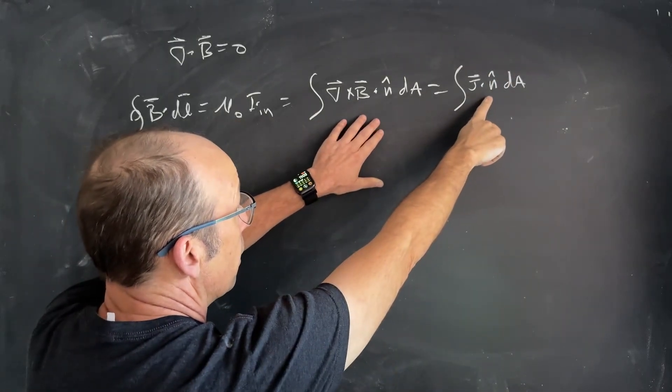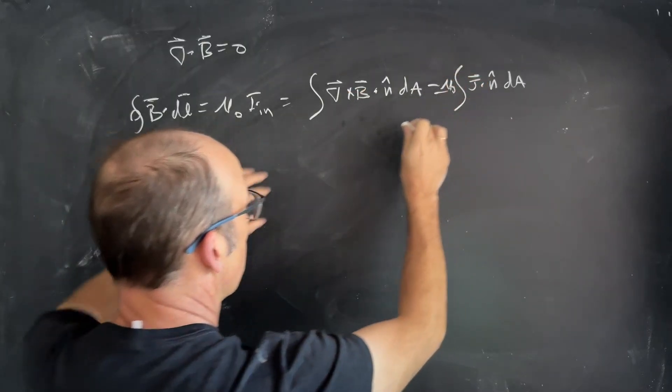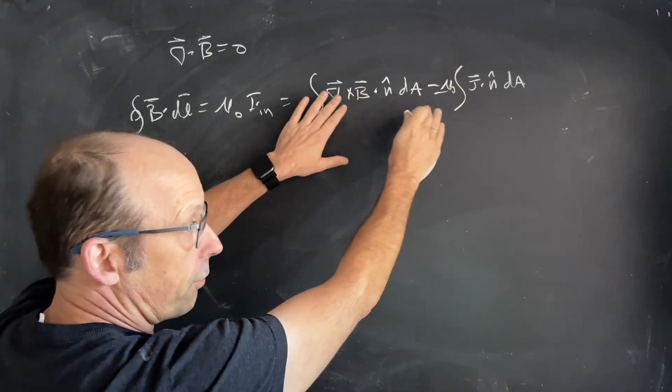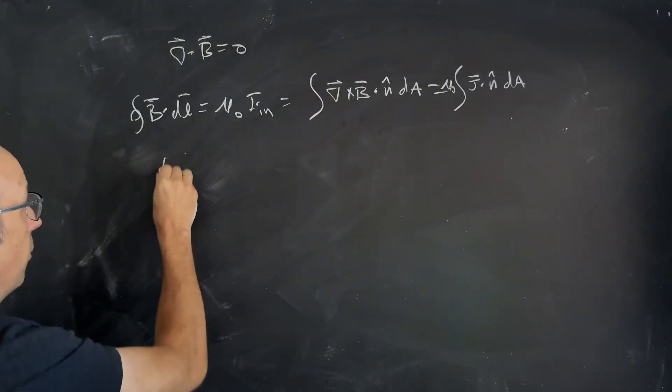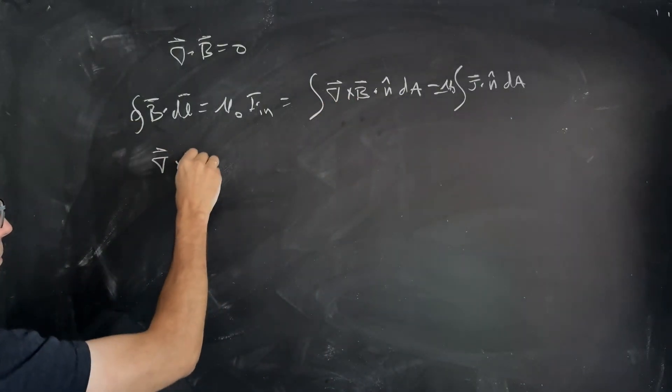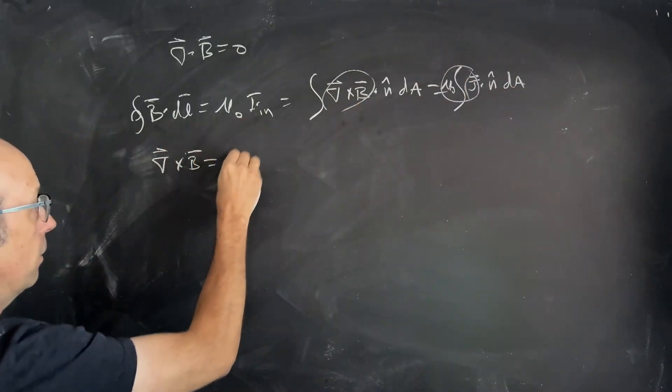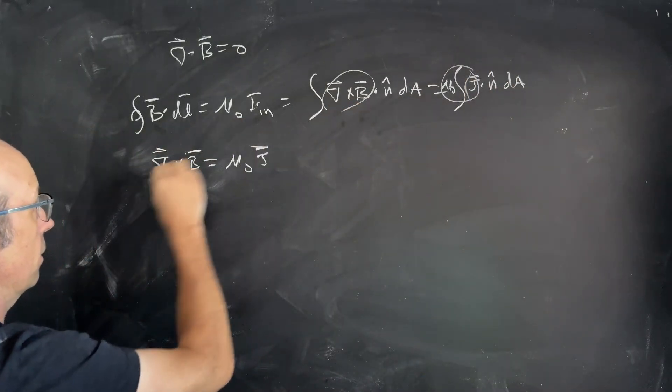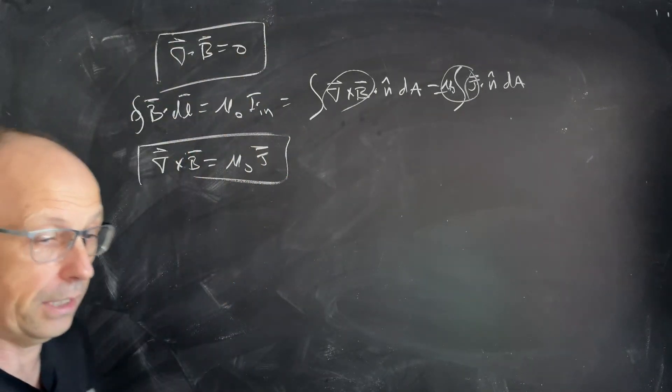Well, right here, if that's the, oh, there's a mu naught. So, if the integrals are the same, well, then I can say the integrands are the same. So, I get Del cross B, that part has to be equal to that part, mu naught J. So, these are our two starting identities that we need to use.